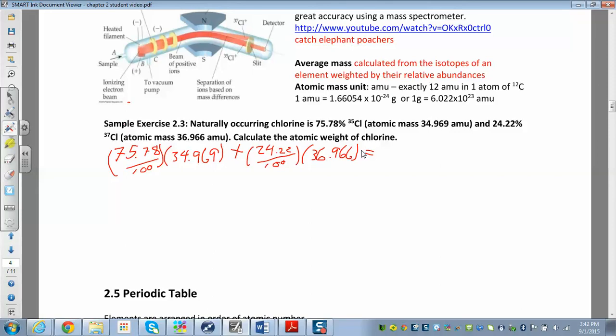Notice that when you add these two percents, they have to equal 100. So if you had a third one, I think the homework has a third one, they would have to add up to be a hundred percent. So when you work all this out, you should get about 35.45.